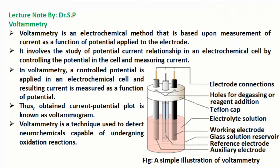Voltammetry is a technique used to detect neurochemicals capable of undergoing oxidation reactions. A simple illustration of voltammetry is shown in the figure, which includes a working electrode, auxiliary or counter electrode, reference electrode, an electrochemical system containing electrolyte solution, and electrode connections. There are also holes for degassing, which are used to add reagent to the electrochemical system, and the cell is capped by a Teflon cap.